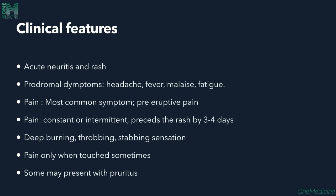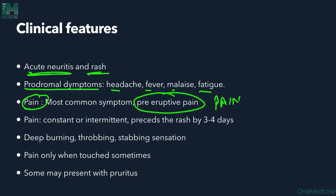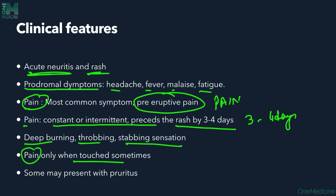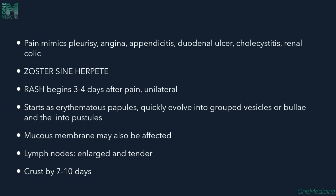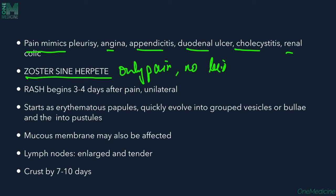Clinical features: Present with acute neuritis and rash. Prodromal symptoms include headache, fever, malaise, and fatigue. Pain is the most common symptom, often pre-eruptive, occurring 3–4 days prior to rash. Pain is constant or intermittent with deep burning, throbbing, stabbing sensations; sometimes only present on touch. Pain can mimic pleurisy, angina, appendicitis, duodenal ulcer, cholecystitis, or renal colic. Zoster sine herpete: segmental pain only without developing any lesions.